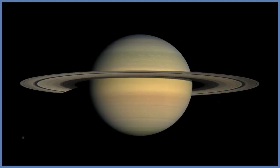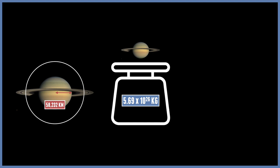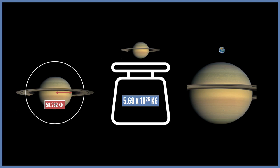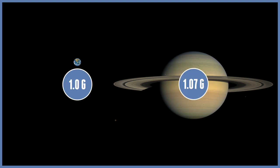Saturn is a very similar planet to Jupiter. At just under 60,000 kilometres, it's the second biggest planet in the solar system, with a mass of 5.69 times 10 to the 26 kilograms, dwarfing all the inner planets. But again, it falls short like Jupiter because of its gaseous composition. Its gravity is only 10.44 metres per second squared — and surprisingly, it has nearly the same g as Earth, at 1.07g.